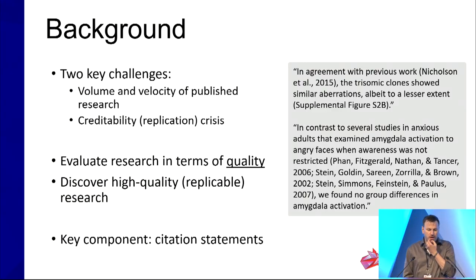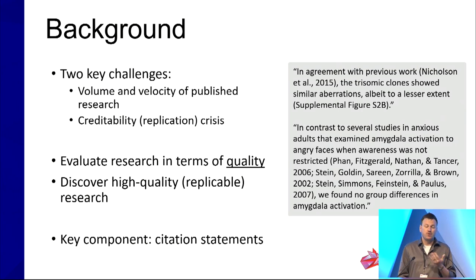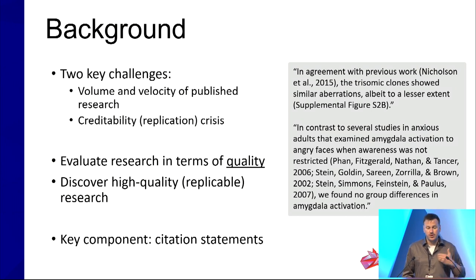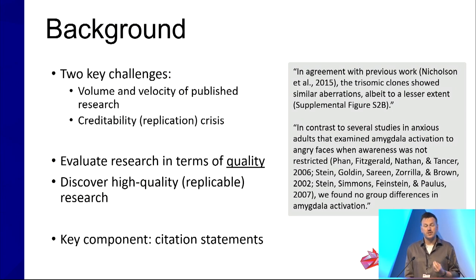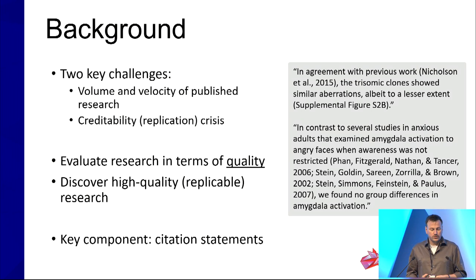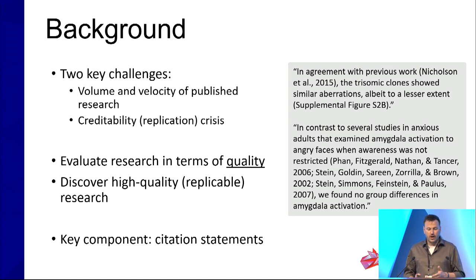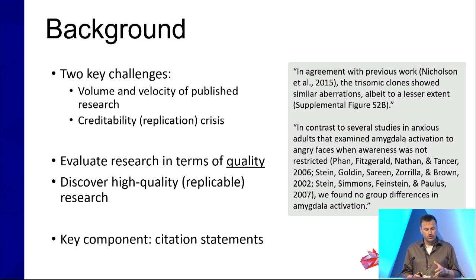Cite was founded in 2018. We started it to address two key challenges. One is simply the volume and velocity of published research — the millions of papers published every year — as well as the extent to which the state-of-the-art on any given topic changes quickly, combined with the credibility or replication crisis. What we really wanted to do was enable researchers to evaluate research in terms of quality, and discover high-quality and ideally replicable research. The key component we leaned on to do this is citation statements.